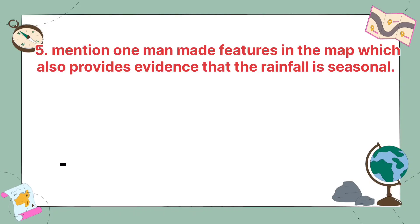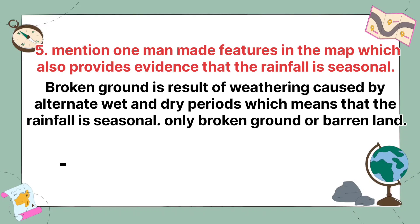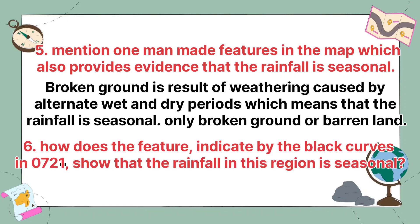Mention one manmade feature in the map which also provides evidence that the rainfall is seasonal. Broken ground is a result of weathering caused by alternate wet and dry periods, which means that the rainfall is seasonal. Broken ground or barren land is the feature that shows rainfall is seasonal.